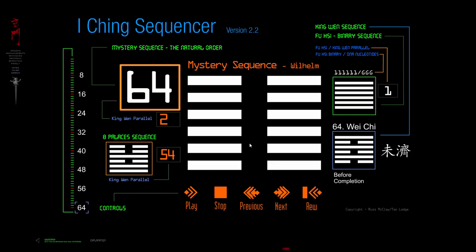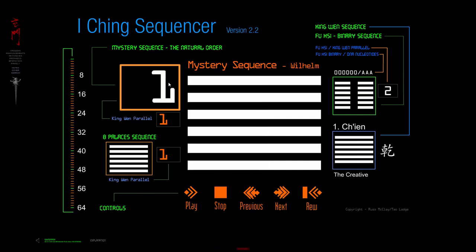Now I'm going to show you the cool thing I really built this for, which is to turn on an animation of this, which helps to see. I'm just going to let it roll for a few rounds. I also added a soundtrack to this thing, which is ridiculous, but I'll play that after a few rounds. And that'll be the end of this demonstration of the I-Ching Sequencer version 2.2. First we'll rewind it to the first hexagram, and here we go.